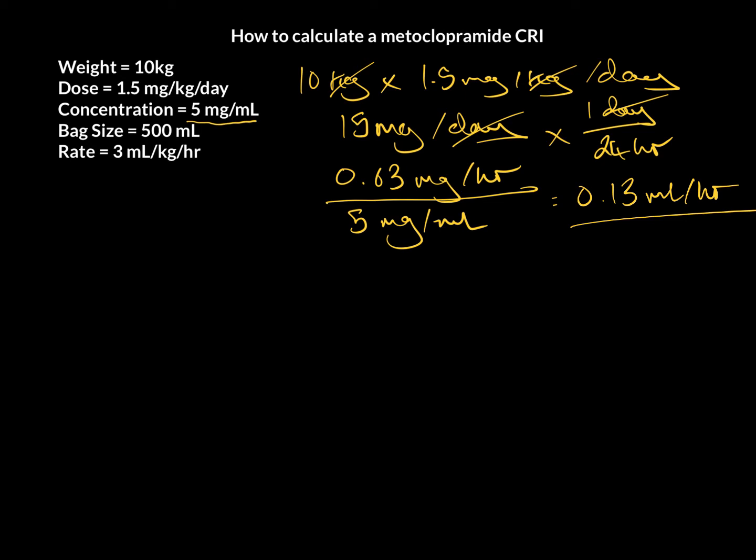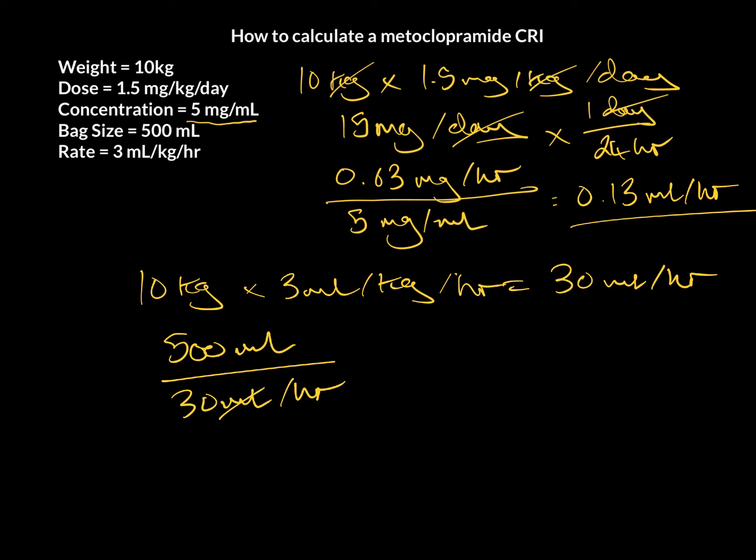So, we're going to step away from the metoclopramide for a moment, and we're going to look at our fluid rate. Our patient weighs 10 kg, and we're giving fluids at 3 mLs per kg per hour, which, as you all figured out, is equal to 30 mLs per hour. If we've got a 500 mL bag, and we're running at 30 mLs per hour, mLs are going to cancel out, and that's going to leave us with about 16.7 hours worth of fluid.